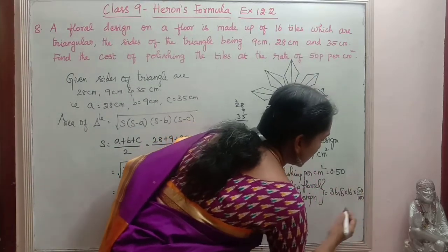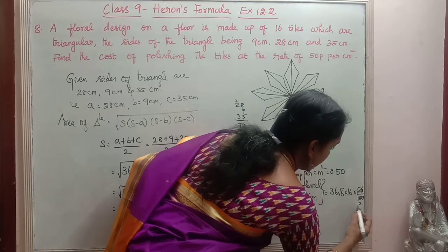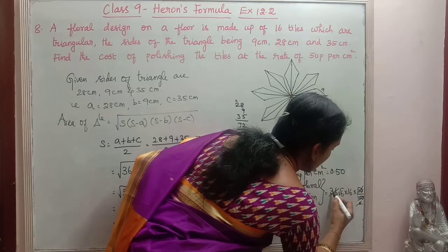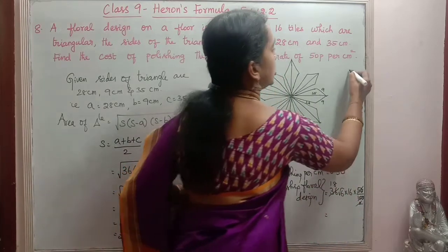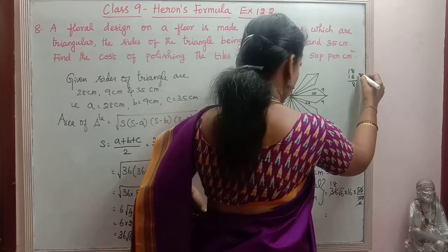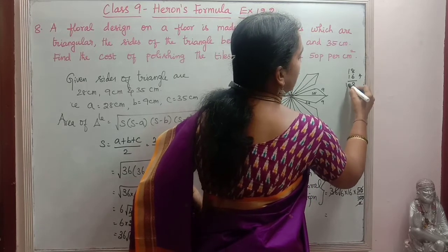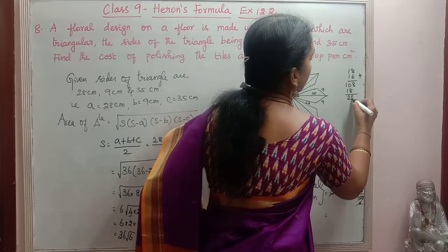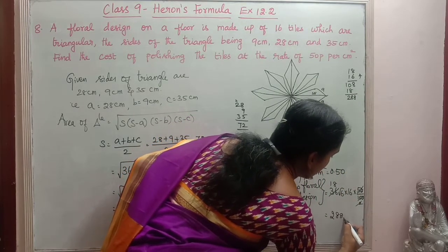Now I am going to simplify this. So 50, 2 times 100. Then 2, 2 1's are 2, 2 8's are 16. So 18 into 16. 18 into 16. 6 8's are 48. 4, 6 1's are 6 plus 4, 10. Then 18, 288. This is equal to 288 root 6.